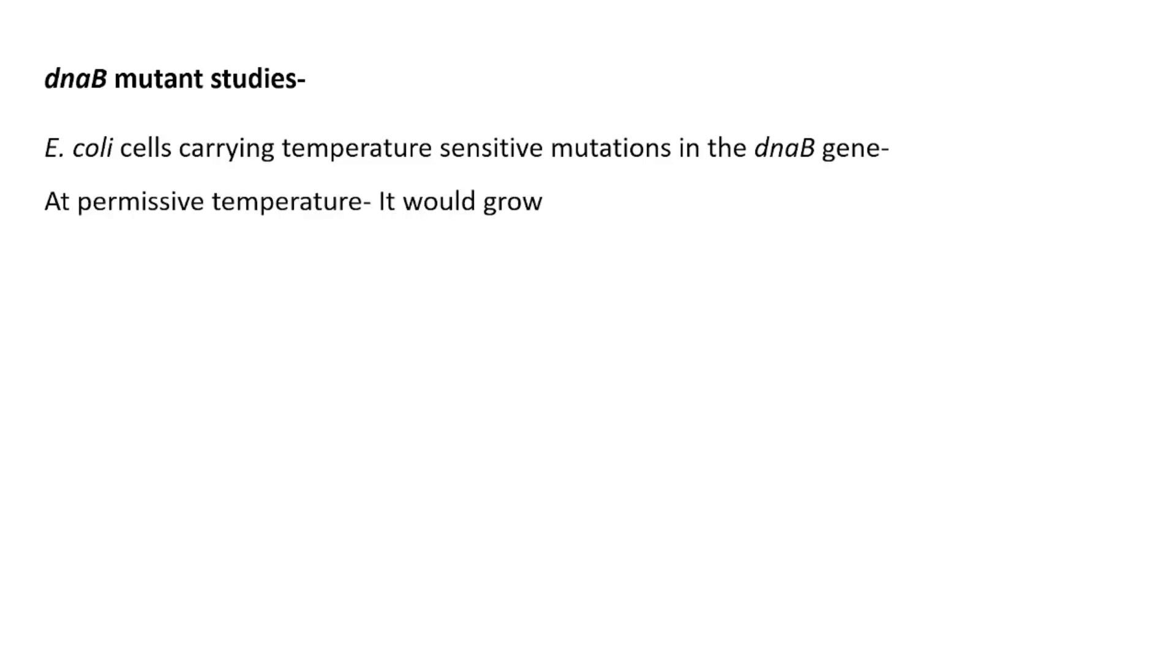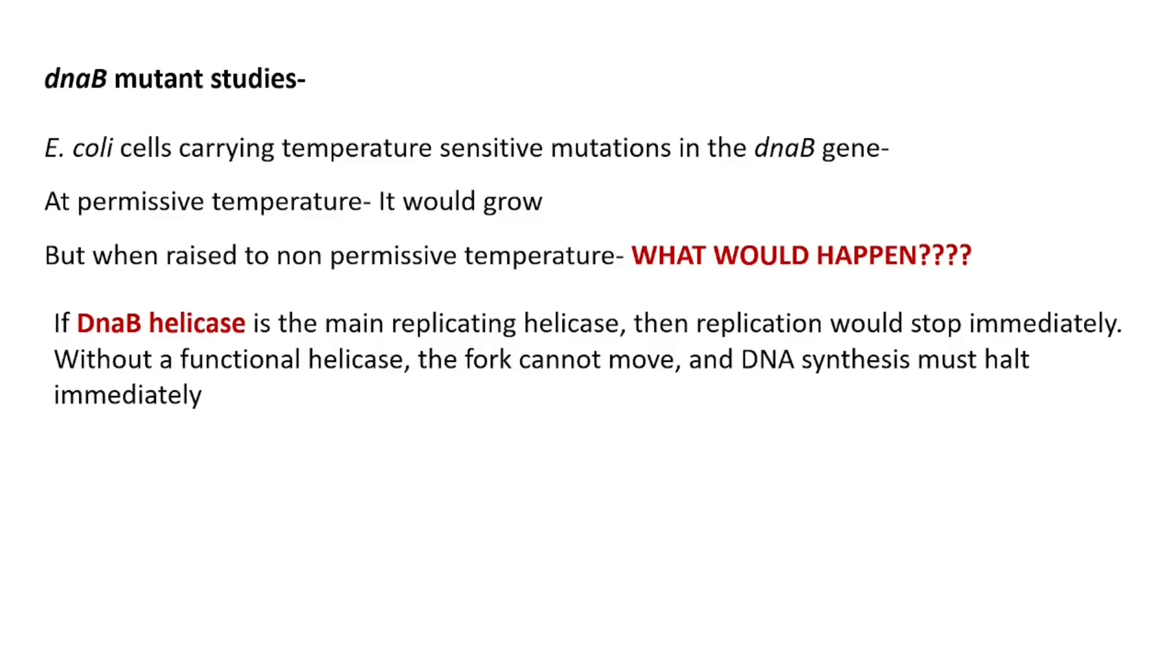Let us now talk about DNA B mutant studies. E. coli cells carrying temperature-sensitive mutations in the DNA B gene were taken. At permissive temperature, it would grow. But when raised to a non-permissive temperature, what would happen? DNA synthesis in such mutants stopped as soon as the temperature rose to the non-permissive level. This is what we would expect if DNA B codes the DNA helicase required for replication. Without a functional helicase, the fork cannot move and DNA synthesis must halt immediately.